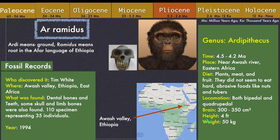In the year 1994, Tim White discovered the fossils of Ardipithecus ramidus in the Awash Valley in Ethiopia, Africa. He found some dental, teeth, skull and limb bones — a total of 110 specimens representing 35 individuals. "Ard" means ground, "Pithecus" means ape, and "Ramidus" means root in the Afar language of Africa.